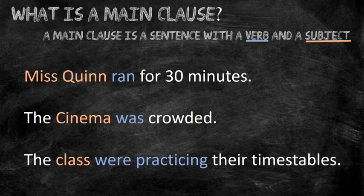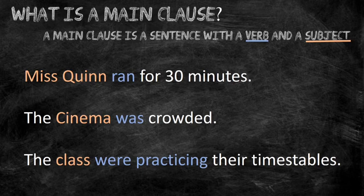So what is a main clause? A main clause is a sentence that has both a verb and a subject, and it should make complete sense on its own. For example: Miss Quinn ran for 30 seconds. The subject in that sentence is Miss Quinn, because it is the thing the sentence is about, and the verb — the action — is ran. So that is a main clause; it makes complete sense on its own.